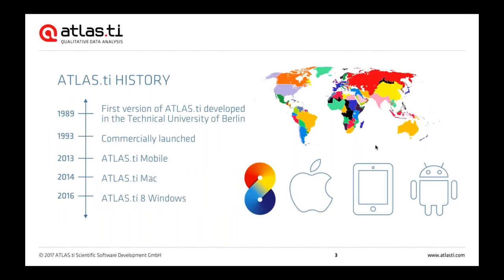Where does Atlas TI come from? The first version was developed at the Technical University of Berlin in 1989. Our headquarters is in Berlin today, but we also count on users and offices all around the world. Atlas TI has been on the commercial market for well over 20 years. Today we have Atlas TI 8 for Windows as well as Atlas TI for Mac, and a free Atlas TI app for Android or iPad tablets.